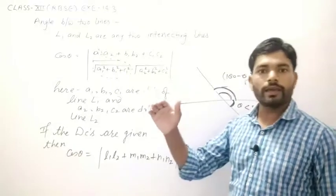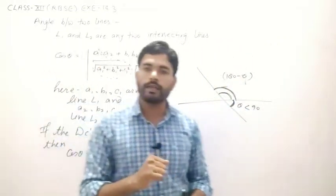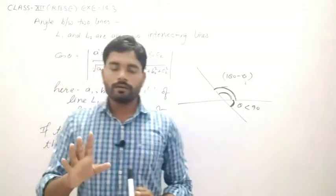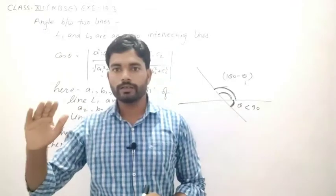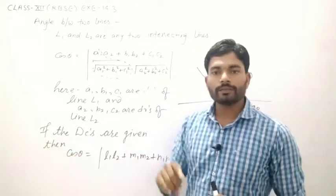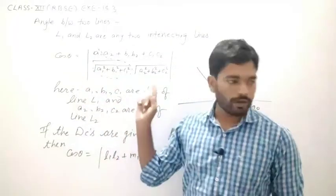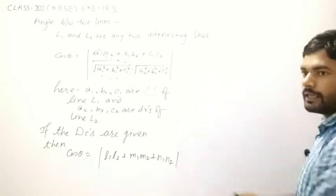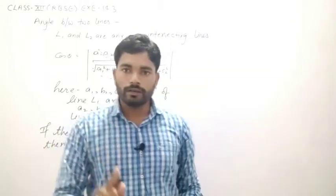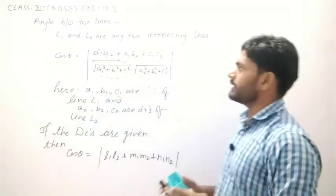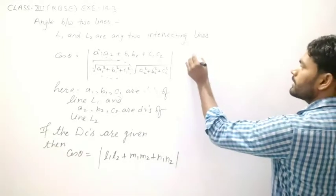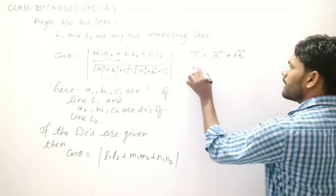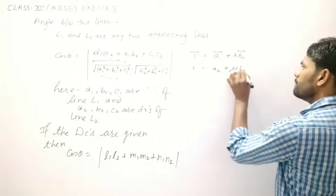Now let's consider what conditions are given in a question. Four conditions are possible: first, direction cosines are given — use the cosine formula; second, direction ratios are given — use the direction ratio formula; third, the line equation is in vector format: r = a₁ vector + λb₁ vector and r = a₂ vector + μb₂ vector.